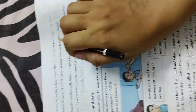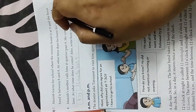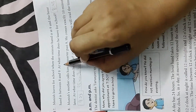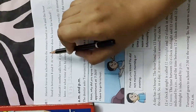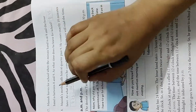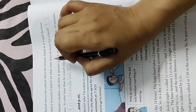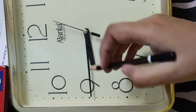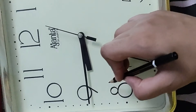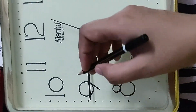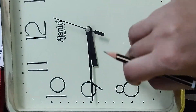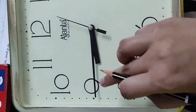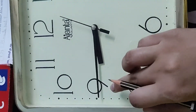Question number 7: Manish leaves for school when the minute hand is at 9 and the hour hand is between 8 and 9. At what time does he leave? The hour hand is between 8 and 9 and the minute hand is at 9 — so 9 multiplied by 5 is 45 — the time is 8:45.